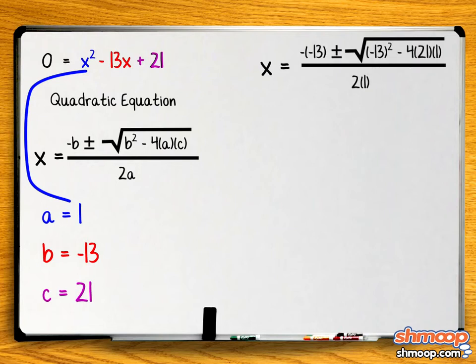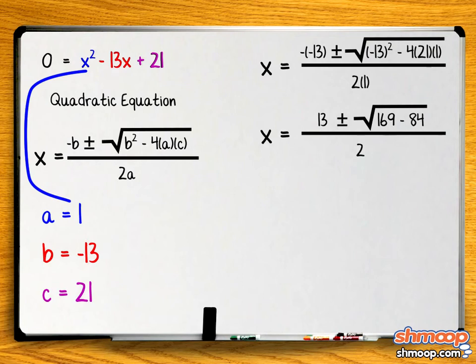We see that x equals 13 plus or minus 13 squared minus 4 times 21 times 1 over 2. This simplifies into x equals 13 plus or minus the square root of 169 minus 84 over 2. Therefore, the answer is x equals 13 plus or minus the square root of 85 over 2.